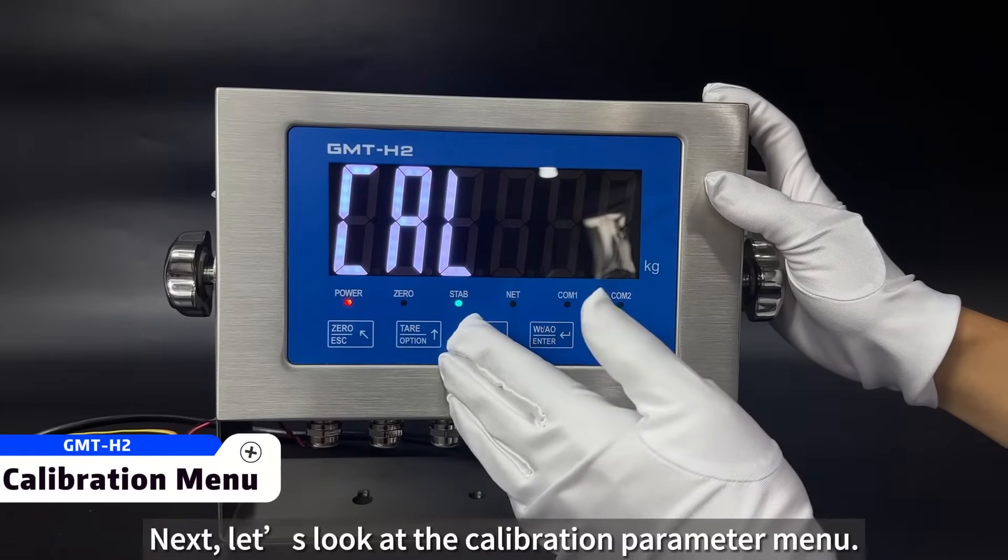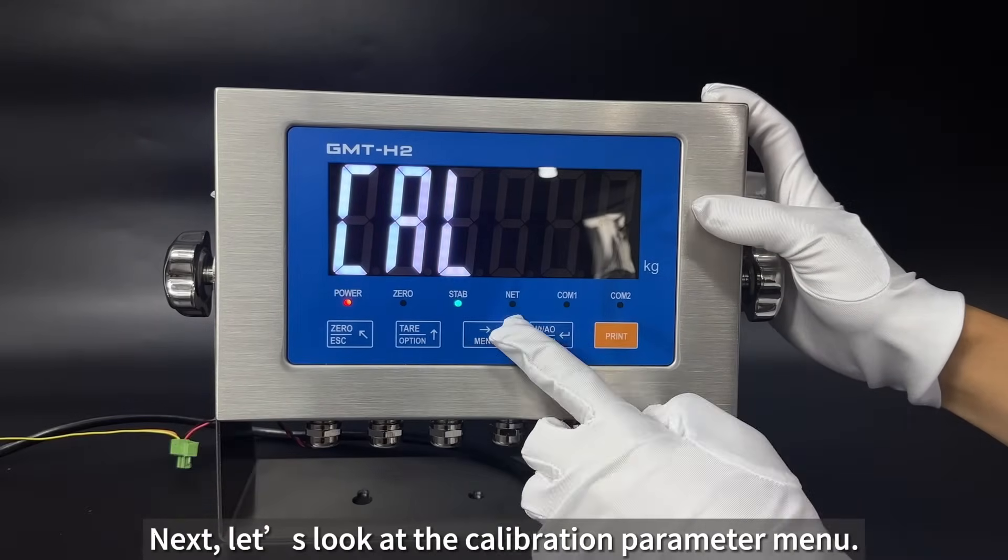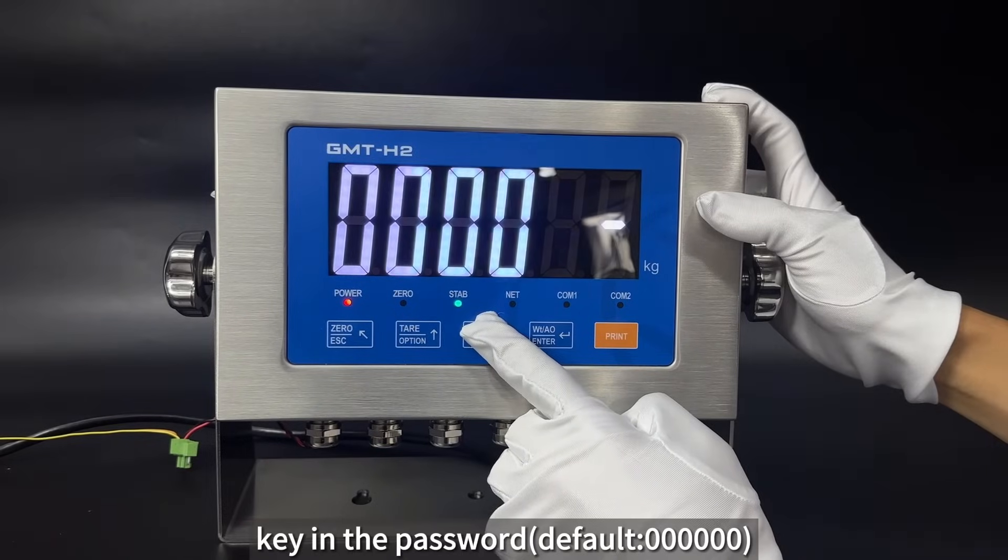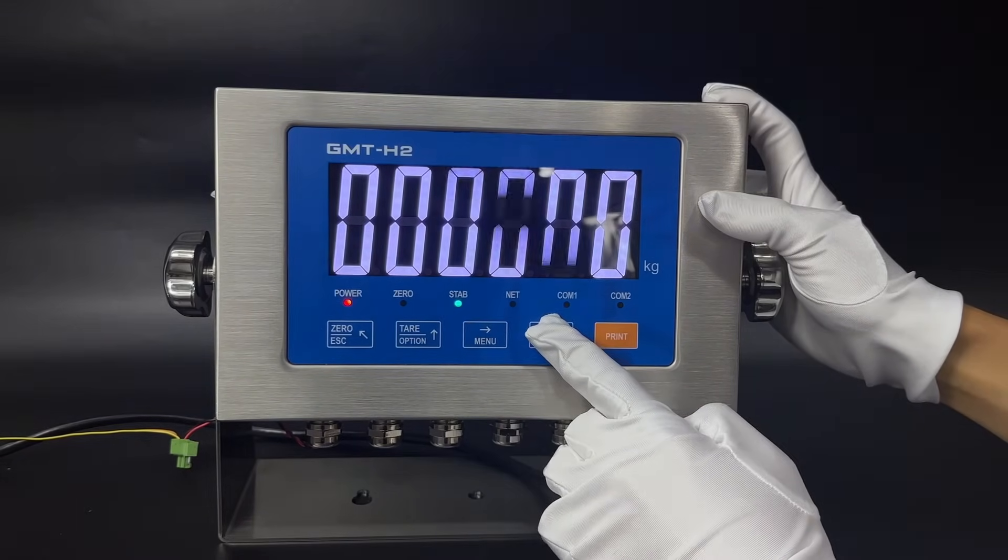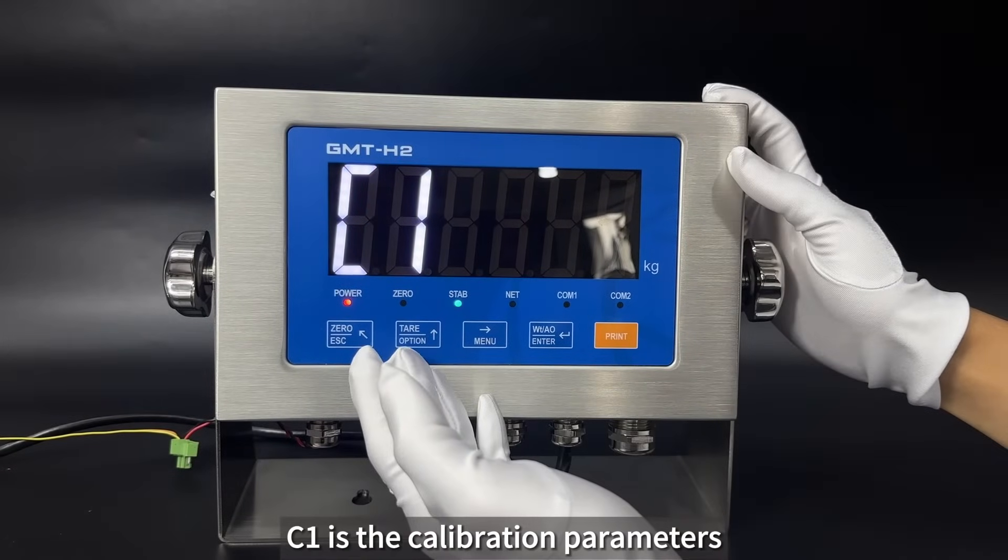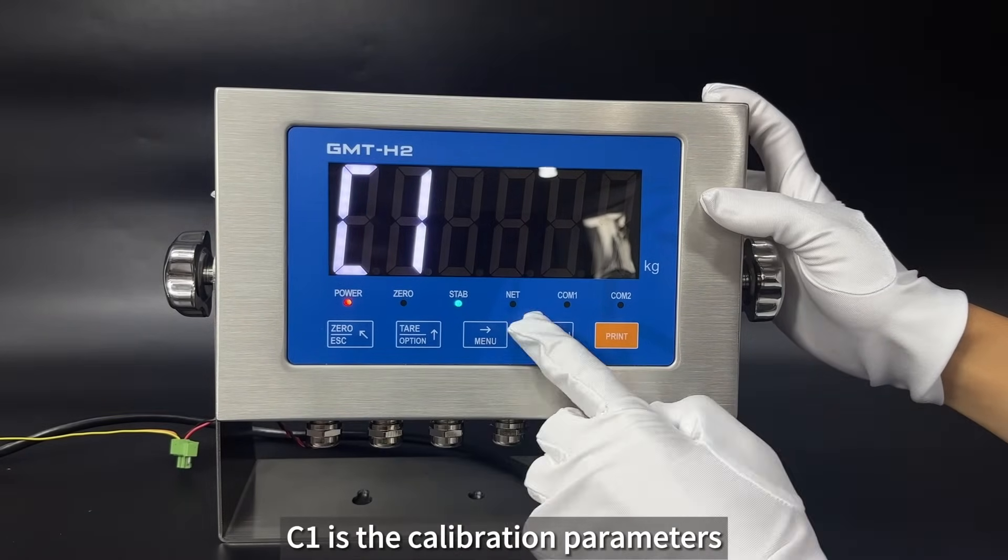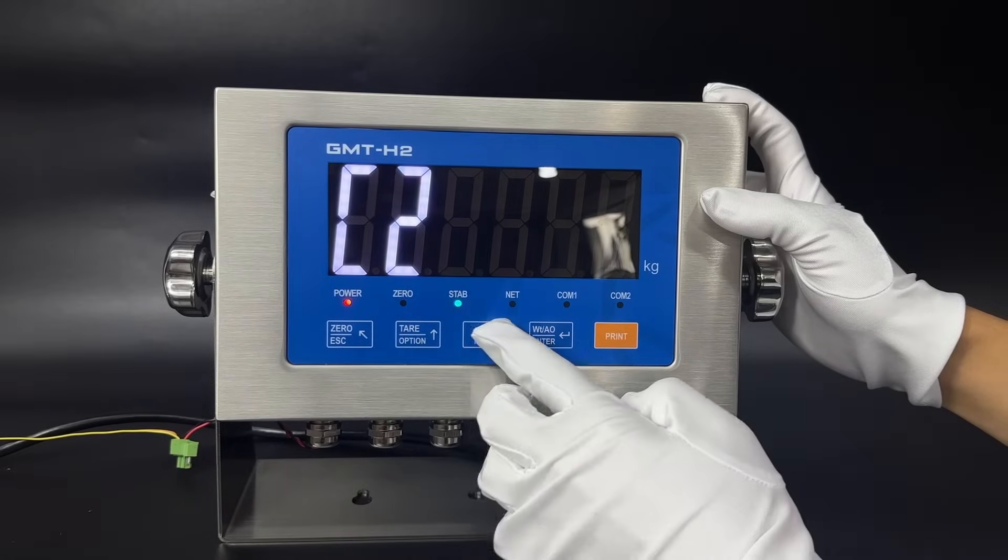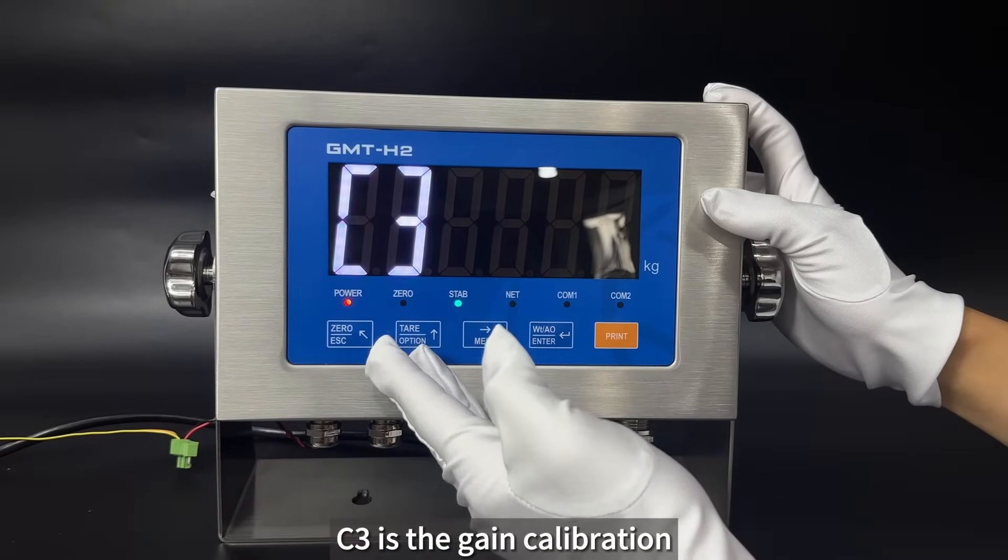Next, let us look at the calibration parameter menu. Press Enter, key in the password. C1.1 is the calibration parameters. C2.1 is the zero calibration. C3.1 is the gain calibration.